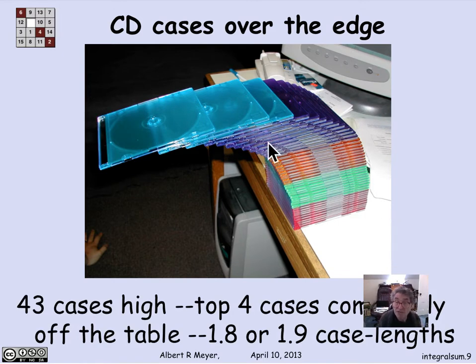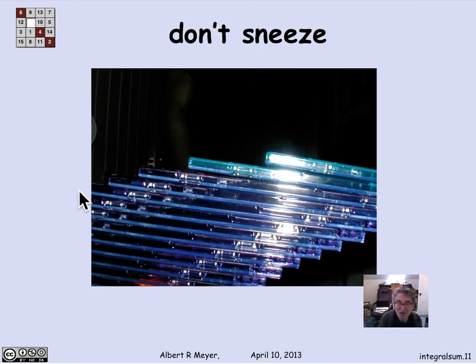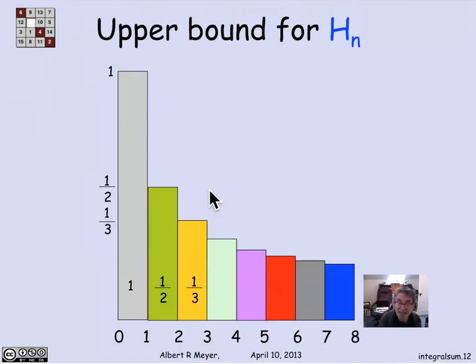This is an example where it's 43 CD cases high, and the top four cases are completely past the edge of the table. The leftmost edge is about 1.8 or 1.9 case lengths past the table. There's another view of it from the guy who made the stack. And they were right on the edge of stability in trying to get the CDs to stick out as far as possible. If you notice these little spaces there in terms of the balancing, it's really just on the brink of falling over. If you sneeze at it, it'll tip. But if you don't sneeze at it, it's stable, and you get the top CD out that far.